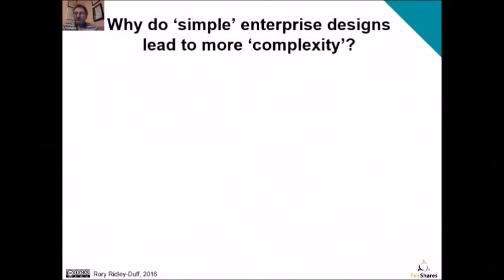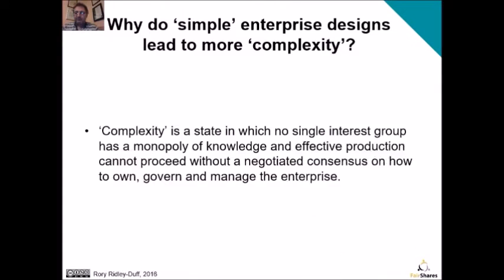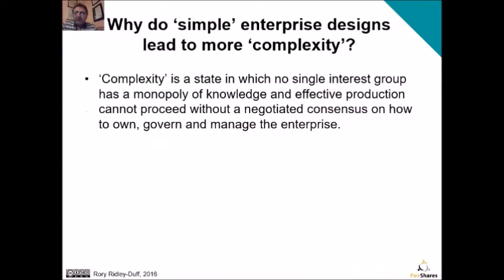Welcome to part three of the Fair Shares guide. In this part, we're going to look at how so-called simple enterprise companies don't deal very well with complexity. Complexity is where you've got several interest groups where none of them have a monopoly on knowledge, and in order to get things done, you have to negotiate a consensus between them on how to own, govern and manage the enterprise.